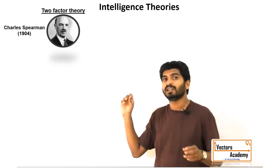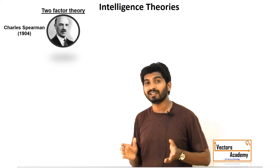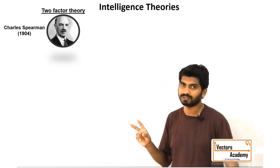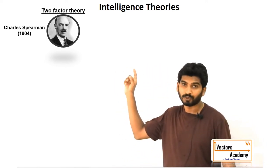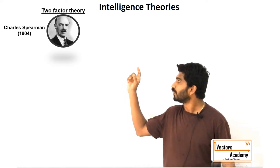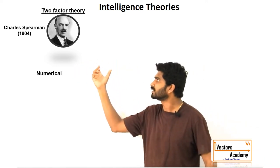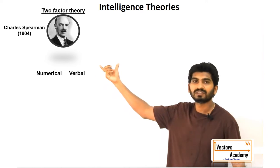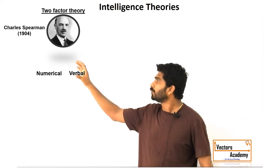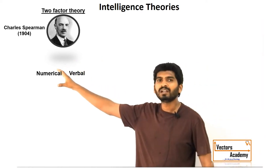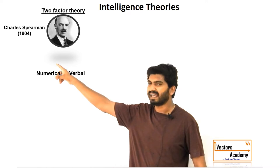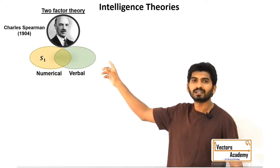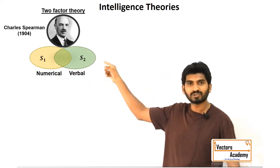Spearman proposed that each intellectual task required two different types of factors to be performed. Consider two tasks: the first one is the numerical task and the second one is the verbal task. To perform the numerical task we require a skill set S1, and to perform the verbal task we require a skill set S2.